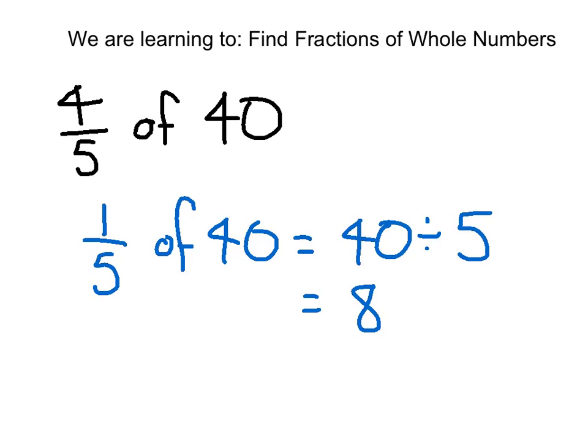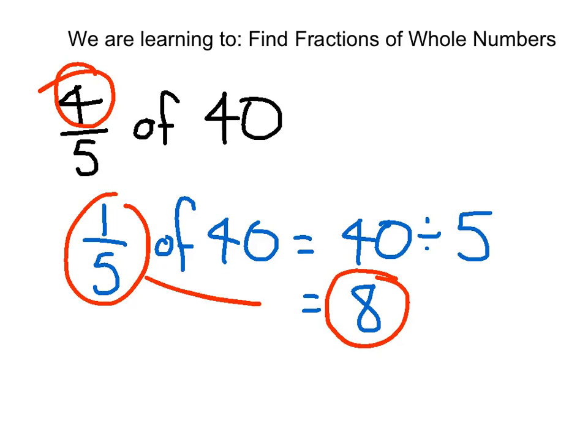So then to work out the 4/5 part, if we know that 1/5 equals 8, then 8 times 4 is going to equal 4/5. We know that 8 times 4 is 32. So the answer to our question at the start: 4/5 of 40 equals 32.